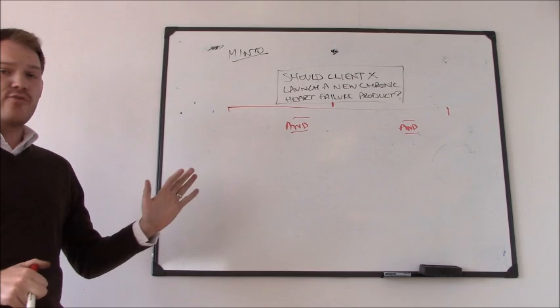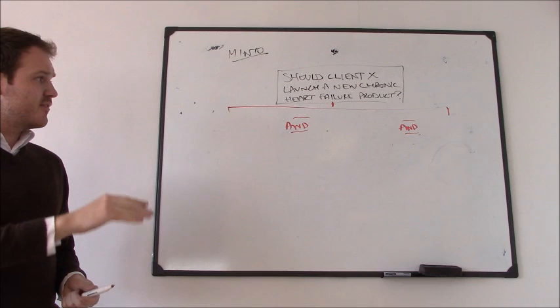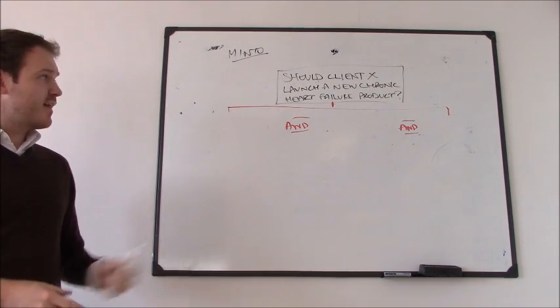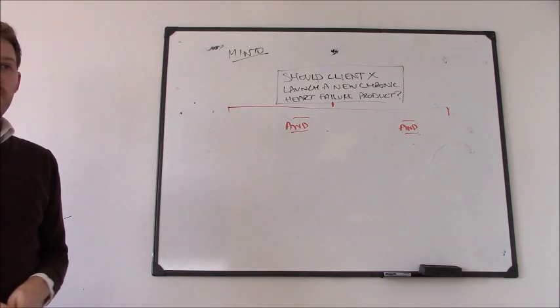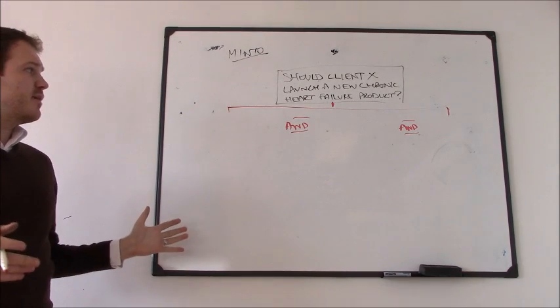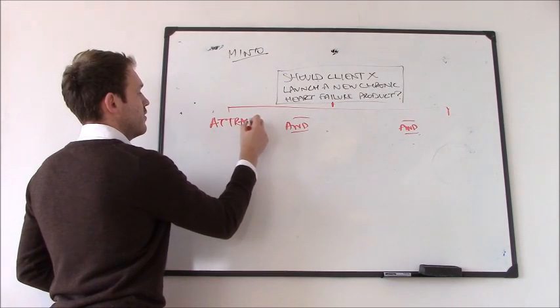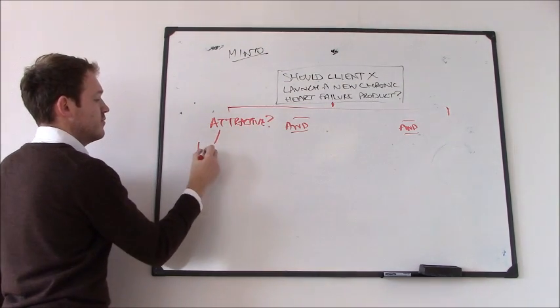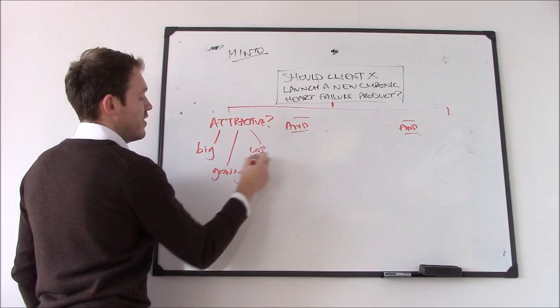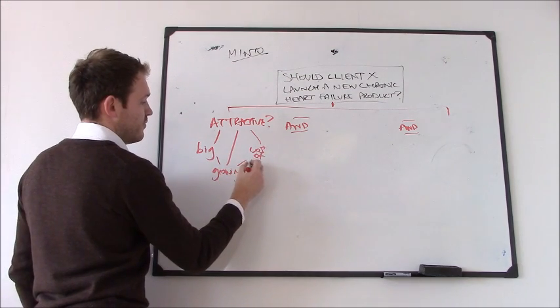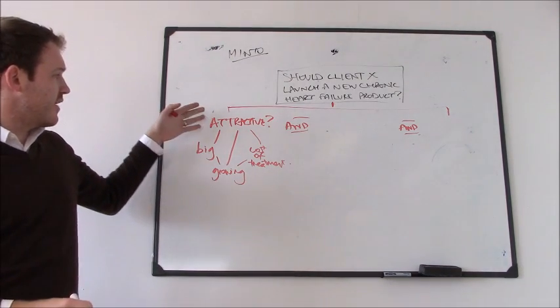Okay, so what we're going to go through here is a Minto model, which is a qualitative way of looking or framing a problem and trying to get down to all of the layers that we need to look at to get to and then produce to answer the question for our client. So here we're going to look at should ClientX launch a new chronic heart failure product. Now immediately when we're thinking about this, we firstly need to know, is it actually an attractive market to go into? So is the market big? Is it growing? And is the cost of treatment growing in line with the pace of change?